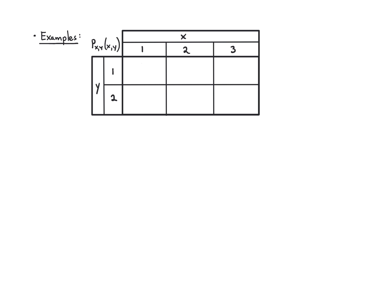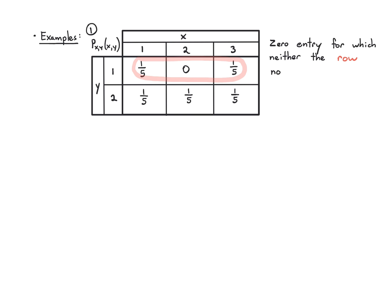For example, consider a table filled with one-fifth, zero, one-fifth, one-fifth, one-fifth, one-fifth. There is a zero entry, but neither the row it's in nor the column it's in is all zeros. This isolated zero cannot be explained by a marginal being zero, so X and Y are dependent — no need to calculate and multiply marginals entry by entry. Just the presence of that isolated zero tells us it won't factor.